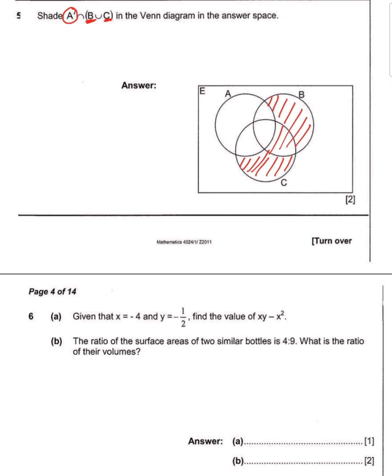Removing the whole entire set A, that's all. Question six says: given that x